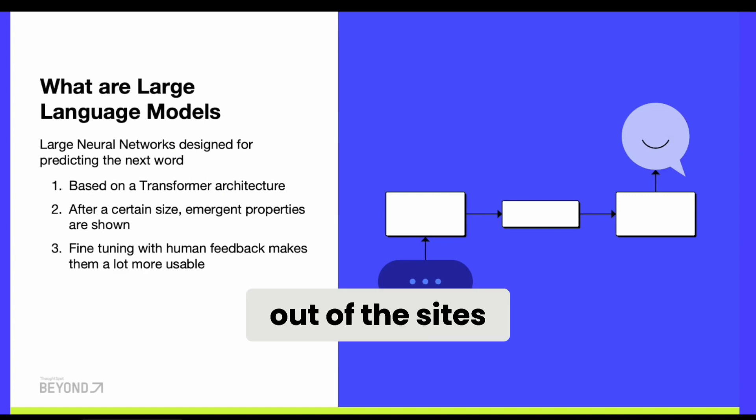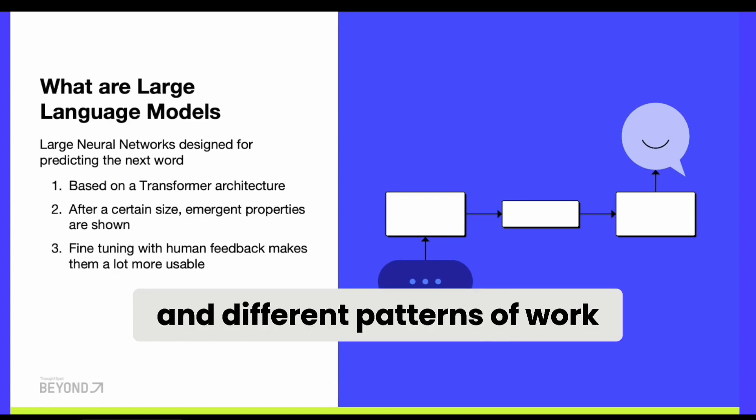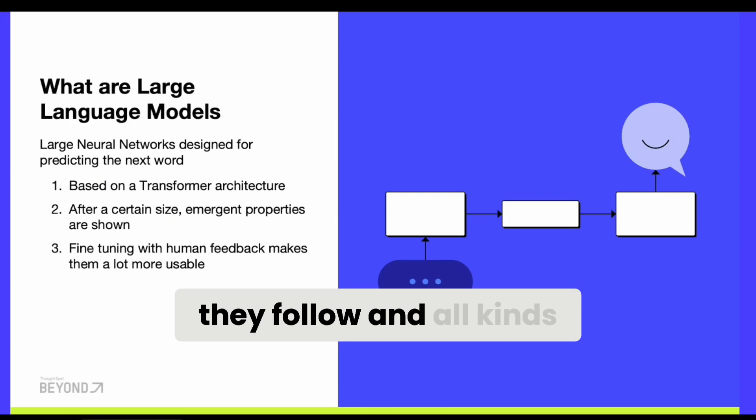This just emerged out of the size, kind of similar to when you watch an ant. One ant or two or four on a table are not doing anything interesting, but once you have a few thousand ants, all of a sudden there's a very interesting ant colony. You see division of labor, different patterns of work, different lines that they follow, and all kinds of emerging properties.